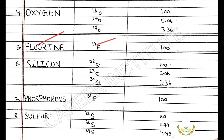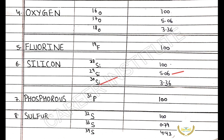The next element is fluorine. Fluorine-19 has the relative abundance of 100%. The next element is silicon. Silicon-28 has the relative abundance of 100%. Silicon-29 has the relative abundance of 5.06%.